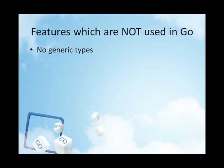Why does Go not have generic types? Generics may well be added at some point. The developers of Go don't feel an urgency for them, although they understand some programmers do. Generics are convenient but they come at a cost in complexity in the type system and runtime. They haven't yet found a design that gives value proportionate to the complexity, although they continue to think about it.